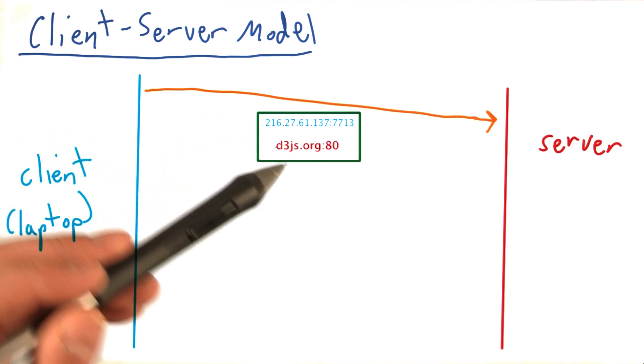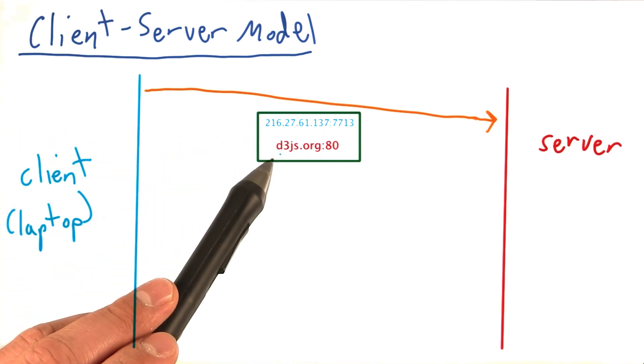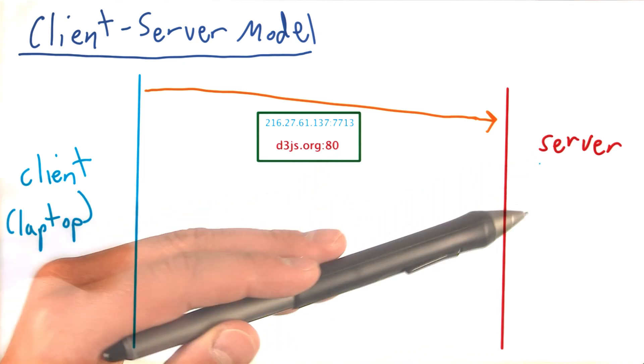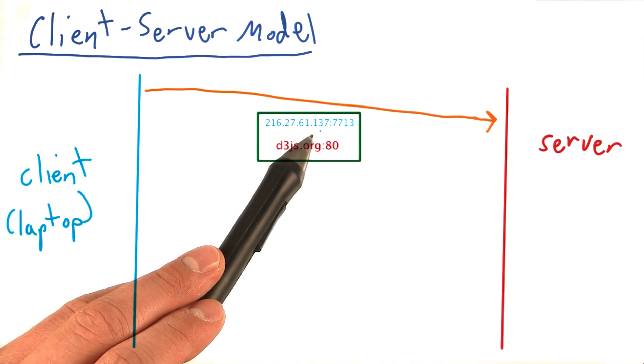You send a letter with both the destination address and the return address. In this case, your destination is d3js.org port 80. And where your friend, in this case the server, should send your book is a somewhat arbitrary IP.